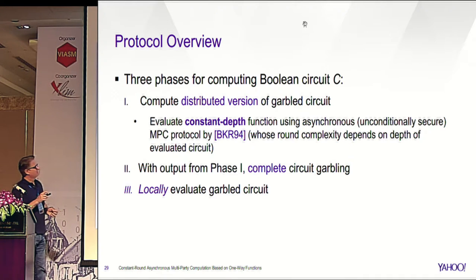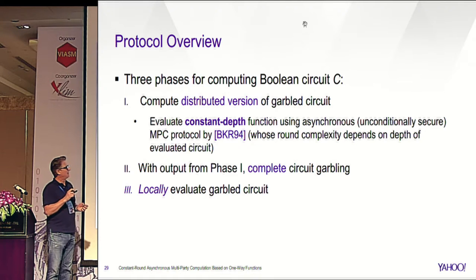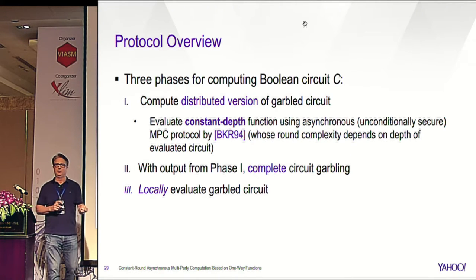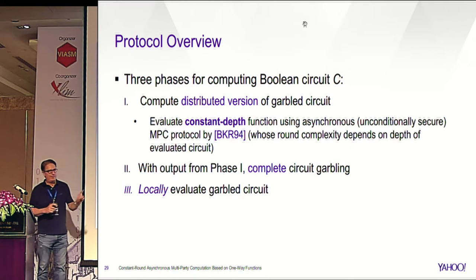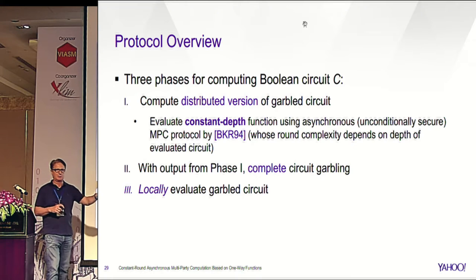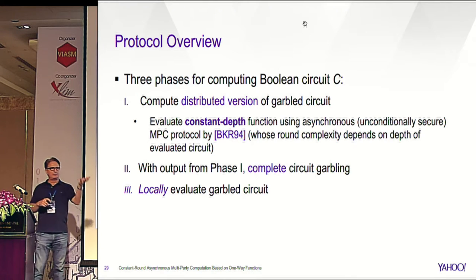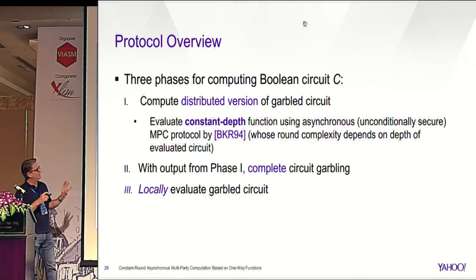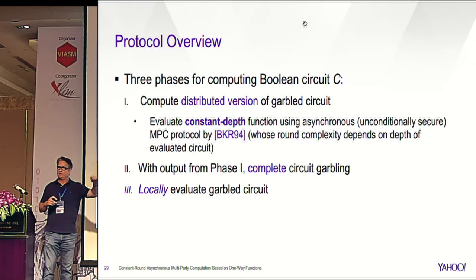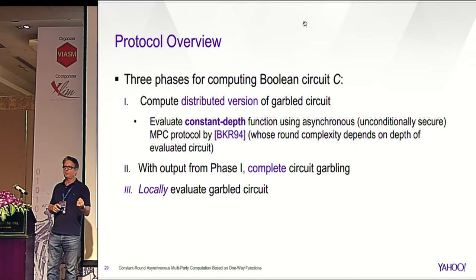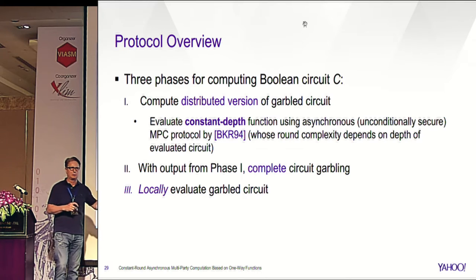For the garbling pre-computation phase, we use the BKR protocol by Benore, Kelman, and Braving, which is an information-theoretically secure protocol for asynchronous networks — the asynchronous version of BGW. Its round count is linear in circuit depth, but since our pre-computation function has constant depth, it remains constant overall. One challenge is that BKR works on arithmetic circuits while we need Boolean circuits, so we need adaptations to work with NAND gates.